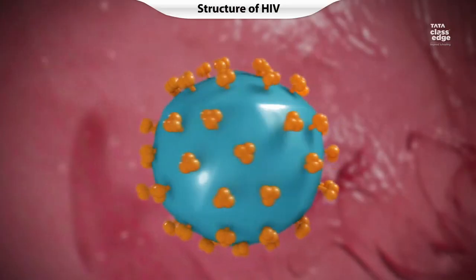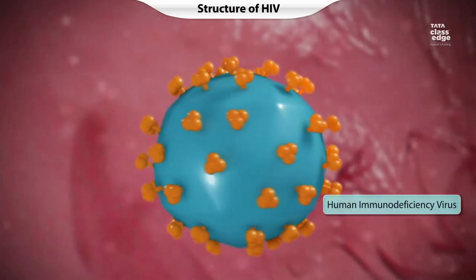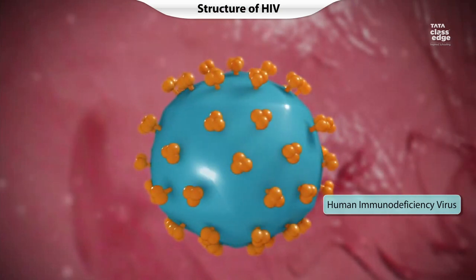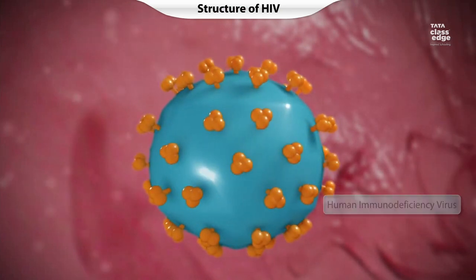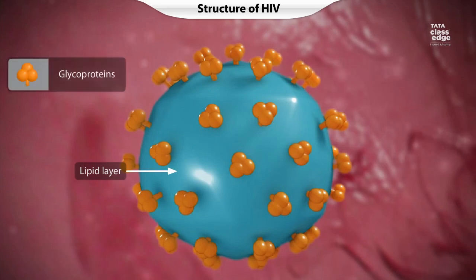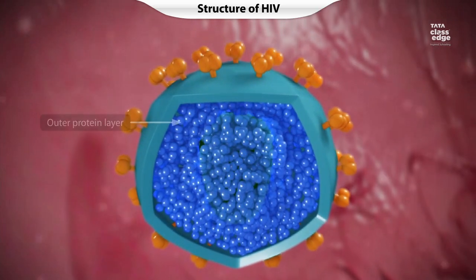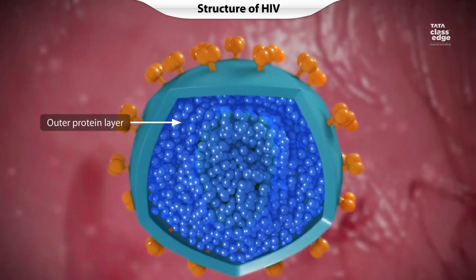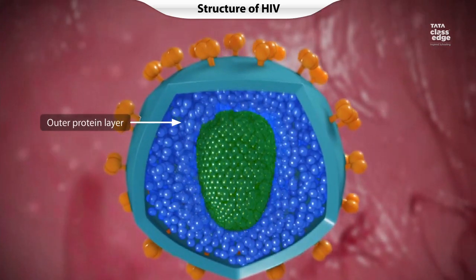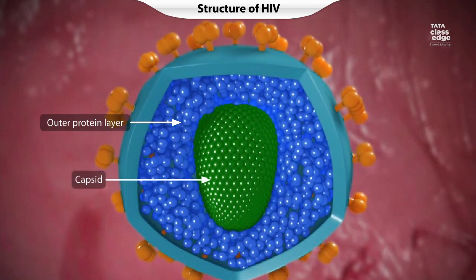AIDS is caused by the Human Immunodeficiency Virus, or HIV. The virus has an outer lipid layer with glycoproteins arranged in peg-like structures on the outside. There are two protein layers below the lipid layer. The inner protein layer is called the capsid.